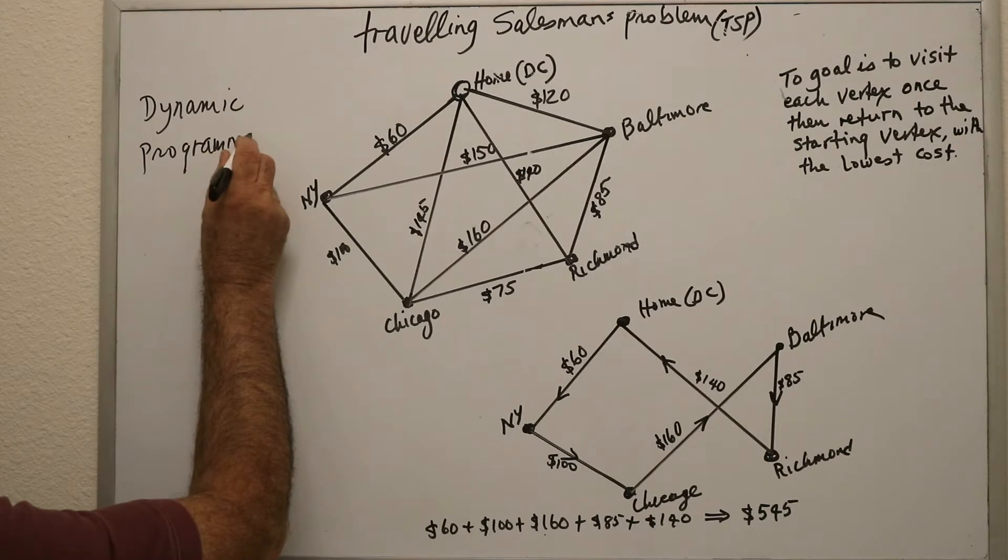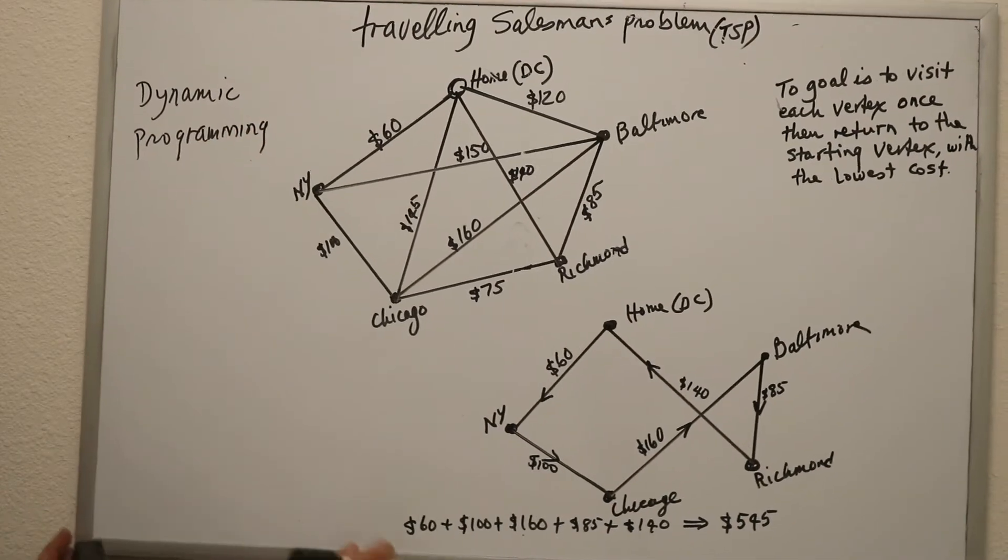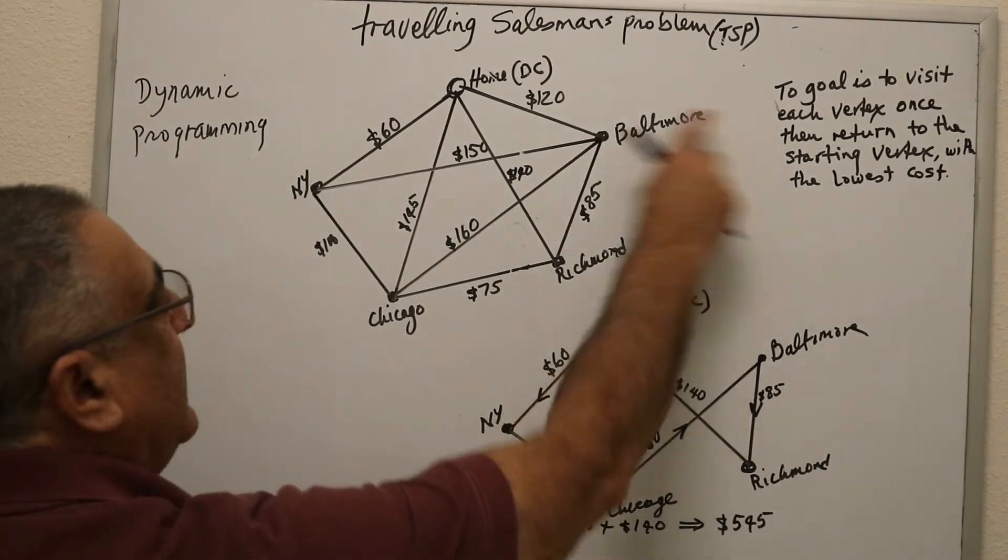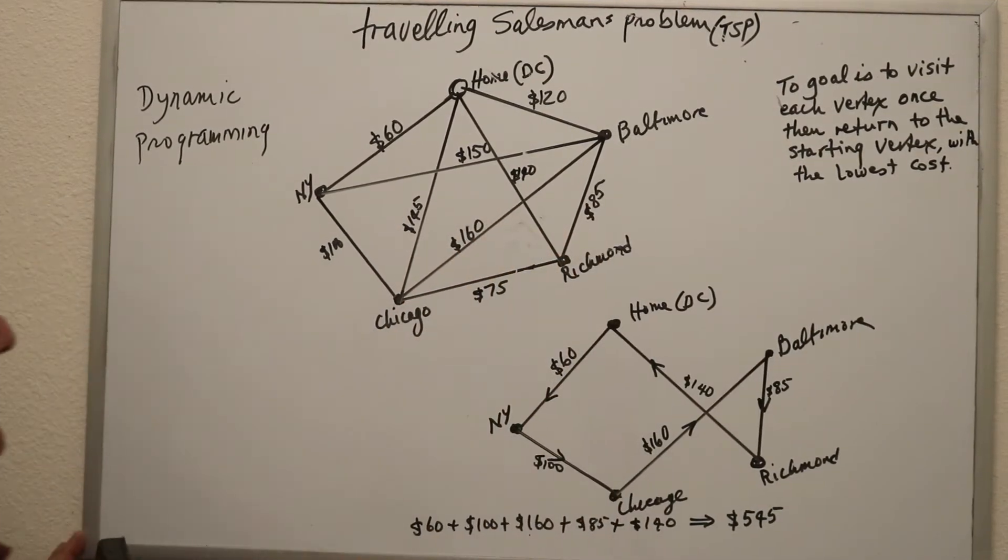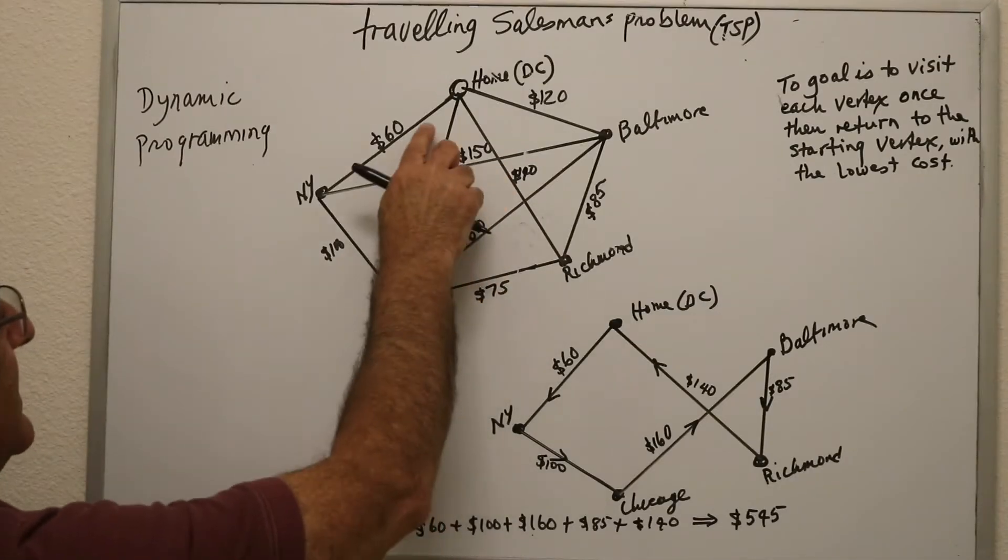Now the goal of this algorithm is to visit each vertex, for instance each city, and return to the starting. So this is a reason they call this a traveling salesman.